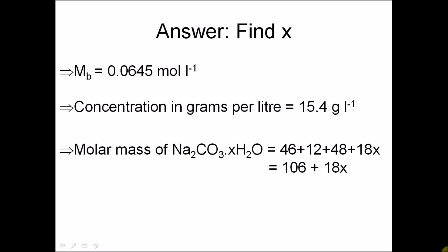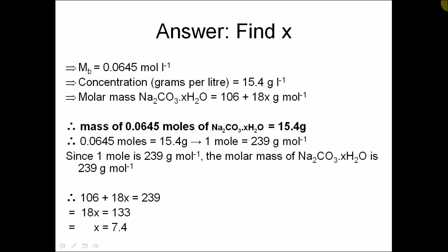Now you need the molar mass. If you add up the relative atomic mass of all the elements in Na₂CO₃·XH₂O, you get 106 + 18x, where x is the unknown value of the water of crystallization. If we let our concentration in molarity and in grams per litre equal each other, we get 1 mole of hydrated sodium carbonate equals 239 grams per mole. We let them equal each other because the concentrations are for the same solution in different units. Now we have the molar mass in terms of x, and setting 106 + 18x equal to 239, we find that x is equal to 7.4.